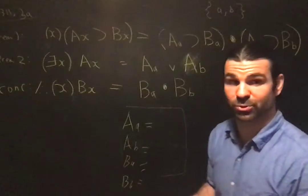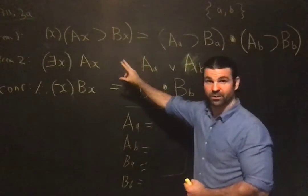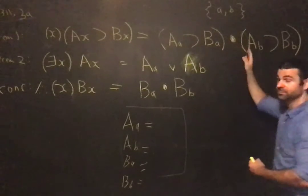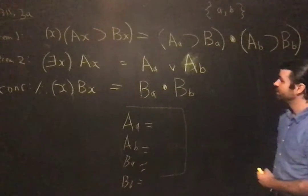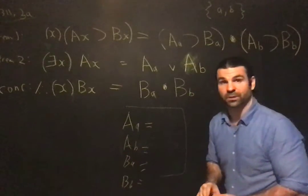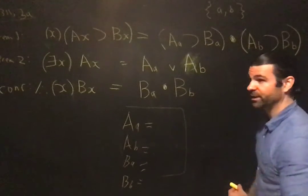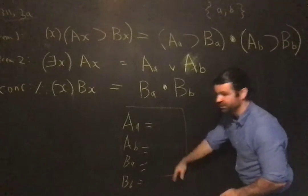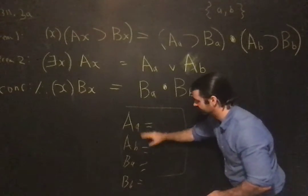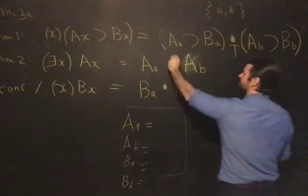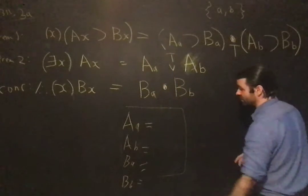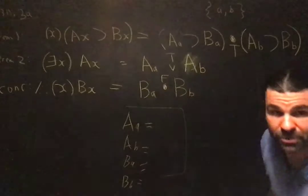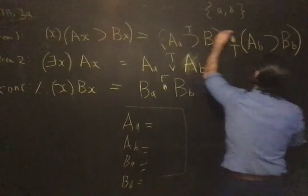Let's work through this argument. We've translated the quantifier statements into truth-functional statements — conjunctions and disjunctions. Now we apply the short truth table method to prove the argument invalid, trying to find a counterexample. I've listed the atoms. I want the first premise to be true, the second premise to be true, and the conclusion to be false. For the conjunction to be true, both conjuncts have to be true.